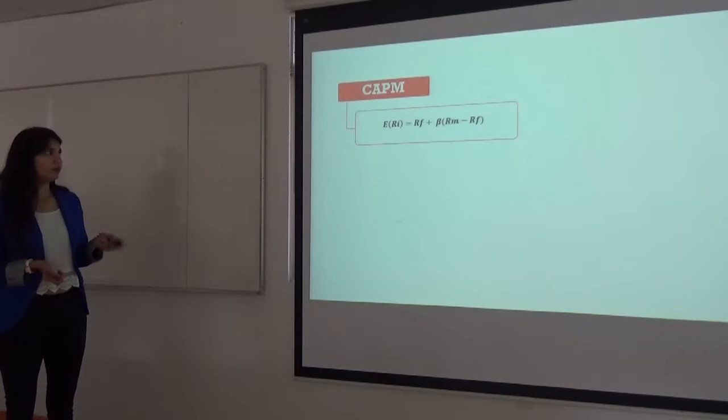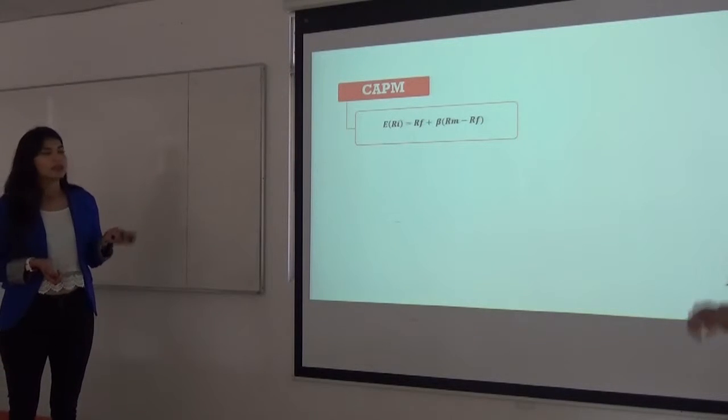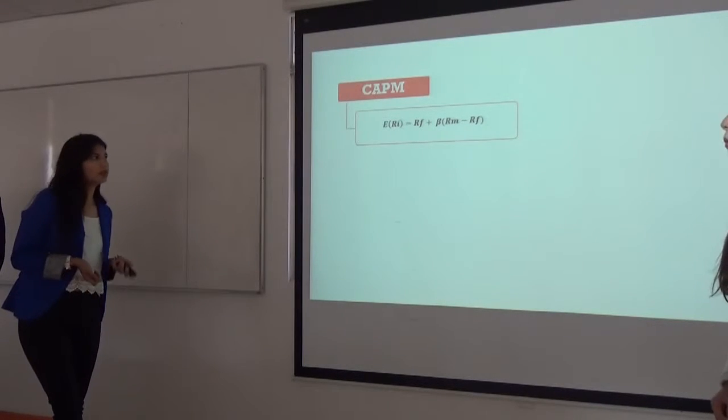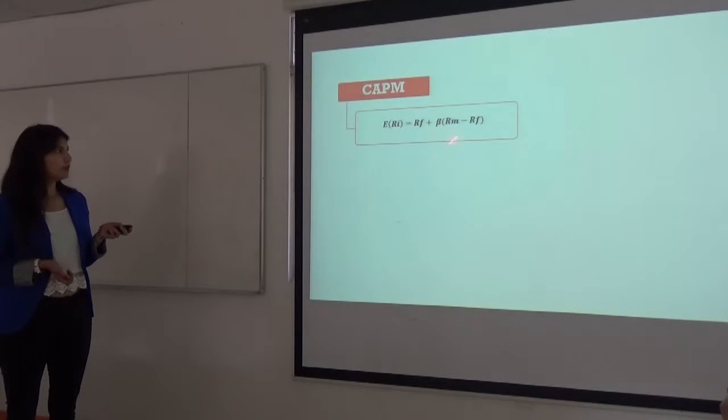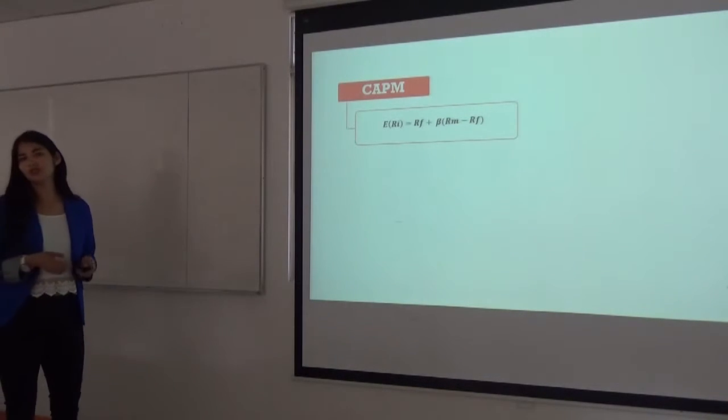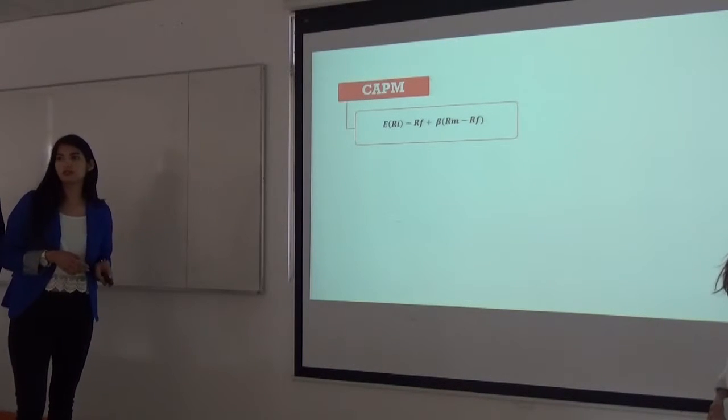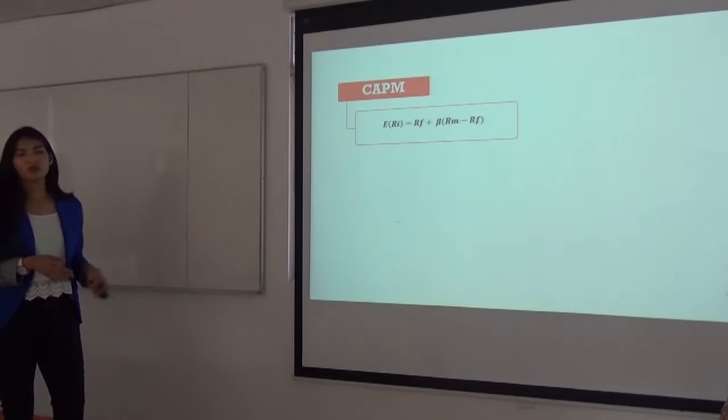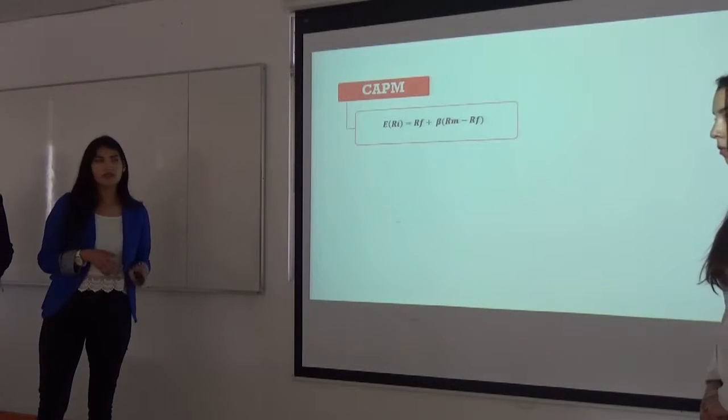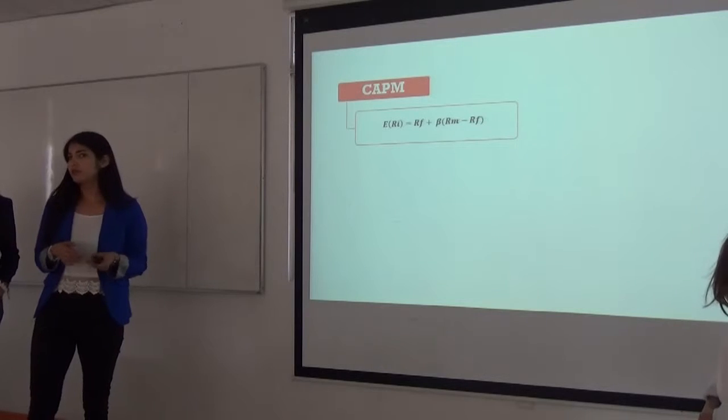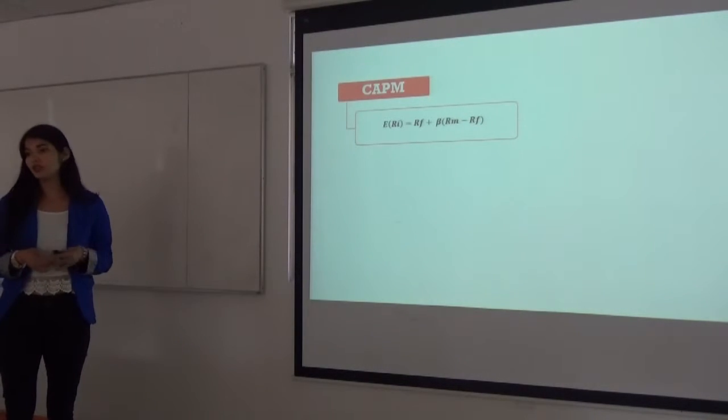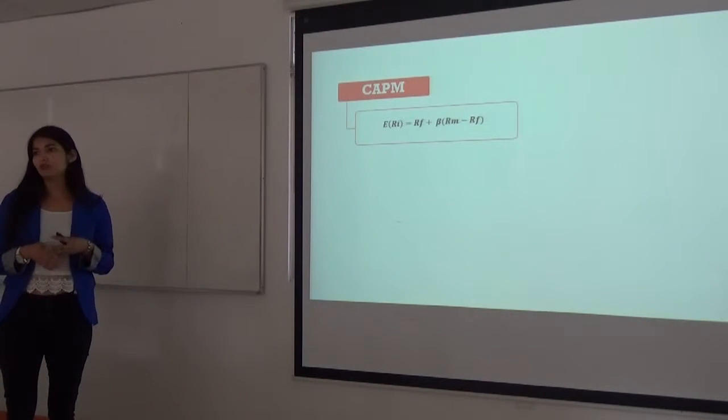Rf is the risk free rate of return. This is the risk premium and beta is the coefficient who measures the sensitivity of the asset to the market change but is not considered a good measure. This is because beta depends on the deviation. And the deviation is a parameter of the normal distribution.